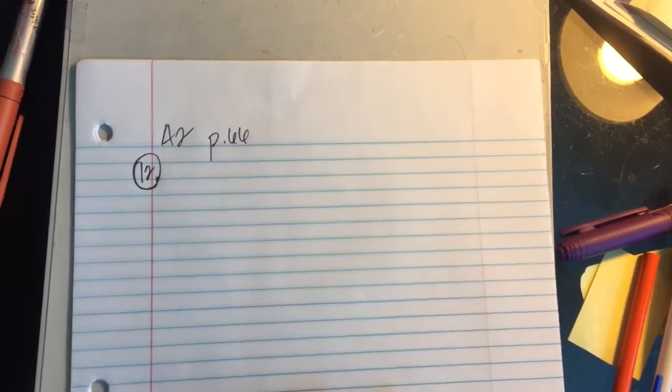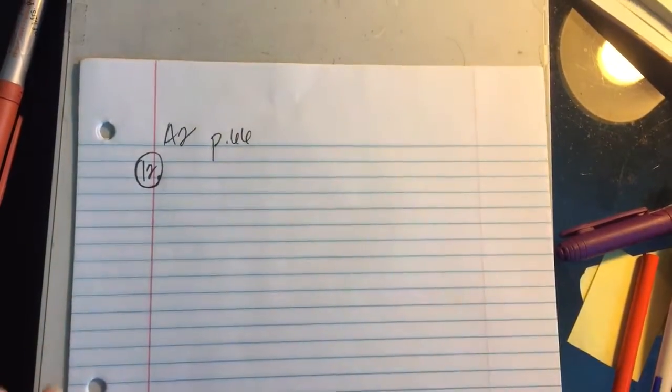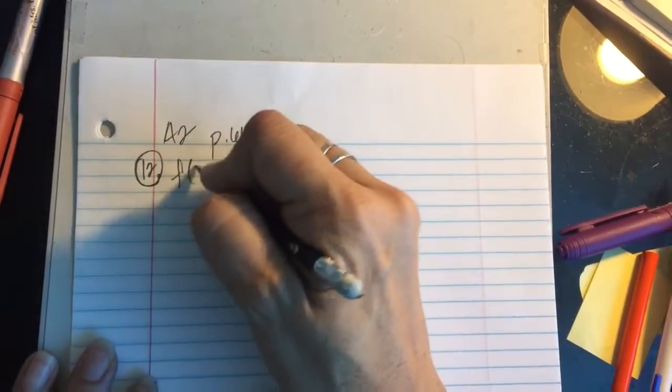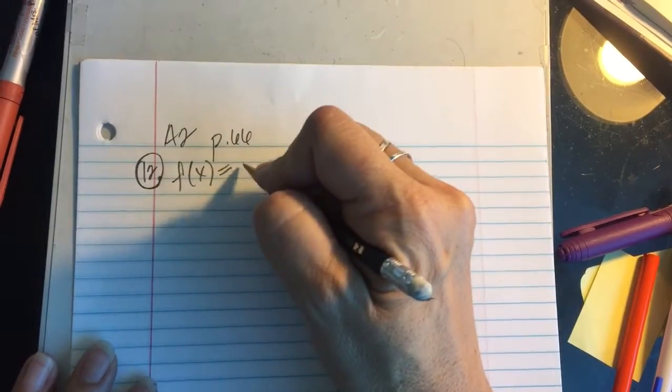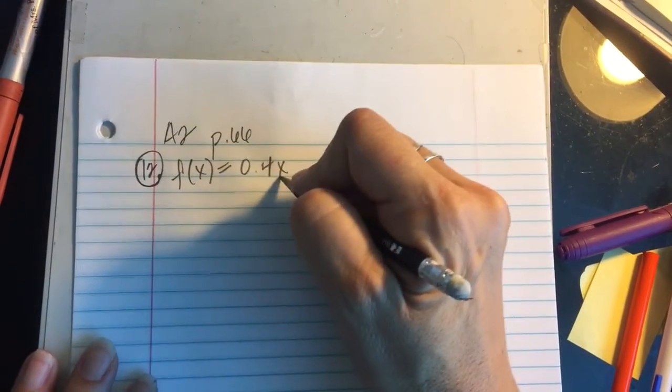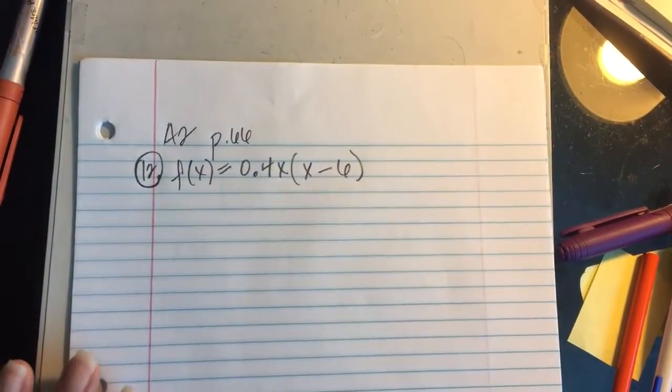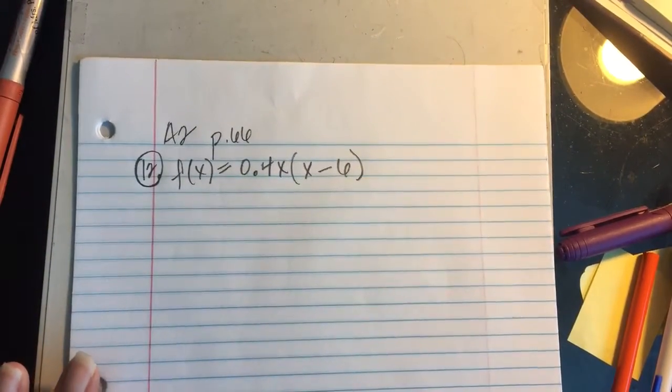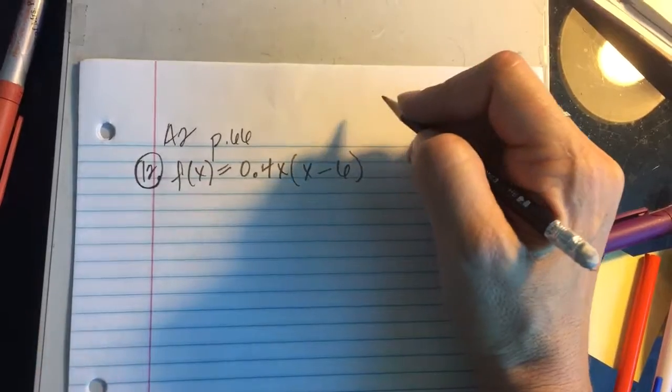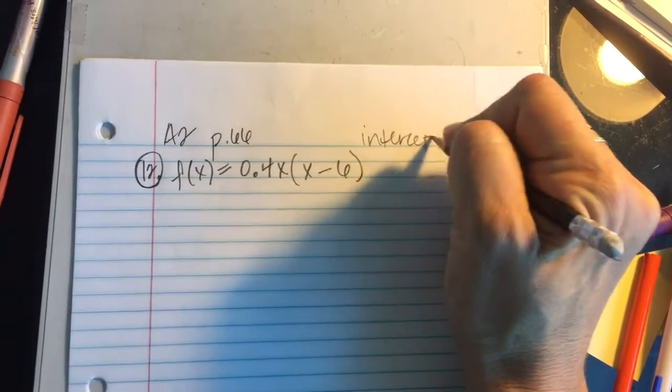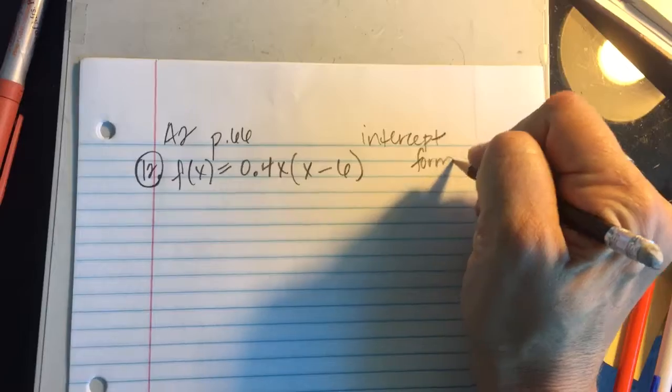Problem number 12 has us working with the function f(x) = 0.4x(x - 6). This one actually, we need to look at this as if it is in that intercept form. And I'll show you how intercept form is kind of hidden in this one.